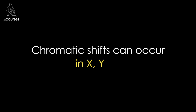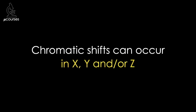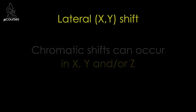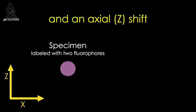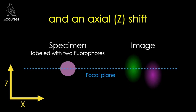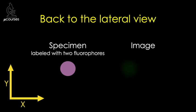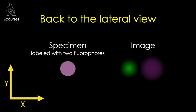So far I've been showing lateral chromatic shifts, but your microscope can also introduce axial chromatic shifts, and most often you'll see a combination of both. If we collect a series of images at regular intervals along the z-axis — often called a z-series or an image stack — and look at an orthogonal view of the image stack, we can see that the green and magenta images are also shifted axially, such that they appear to be in different focal planes. If you're not sure why the image of the bead is elongated in the orthogonal view, please check out the point spread function microcourse. If we go back to the lateral view and focus on the green fluorescence and then collect an image of the magenta fluorescence, we'll find that because of the axial shift, magenta will appear out of focus.